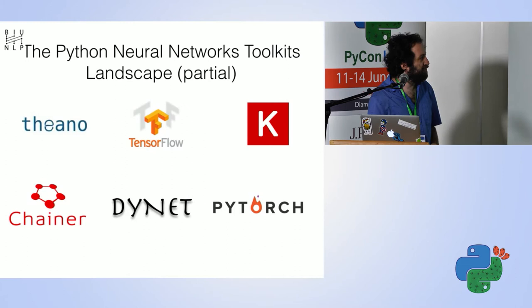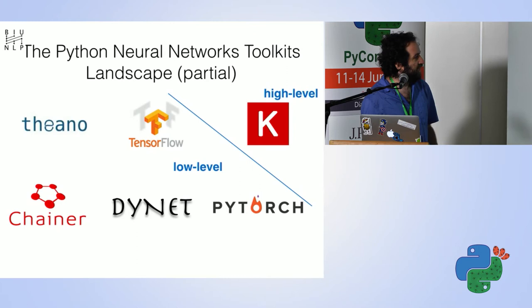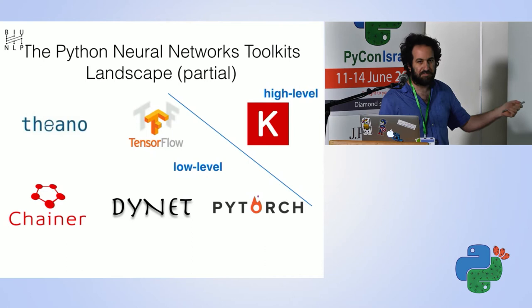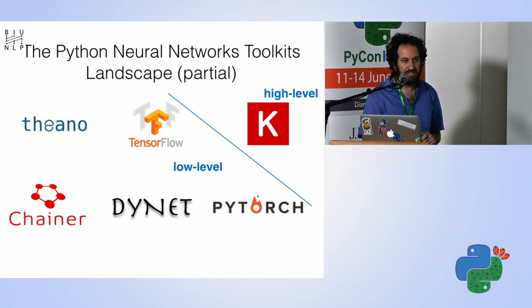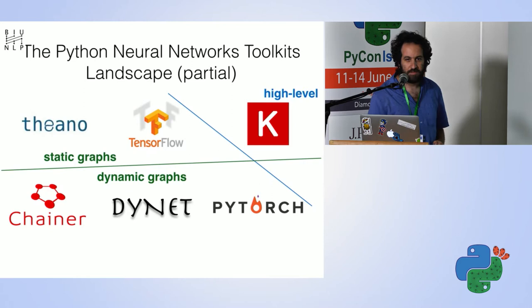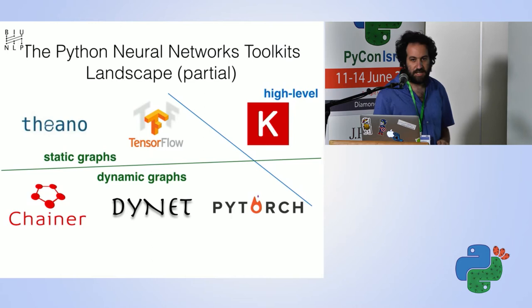If we classify them into groups, Keras is kind of separate because it's a high-level library where you have very large building blocks that you combine. All the others are more low level where you have to define your building blocks from scratch. If you further classify, on the top we have static graph toolkits, and on the bottom we have dynamic graph toolkits. Theano, TensorFlow, and Keras are static. Chainer, DyNet, and PyTorch are dynamic.